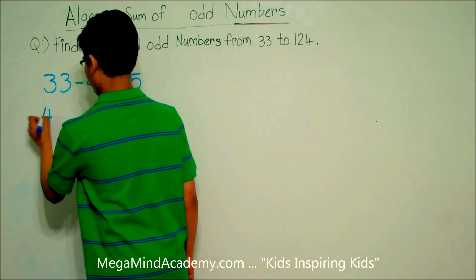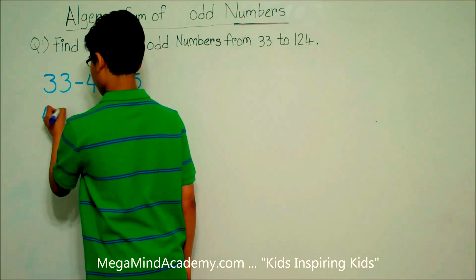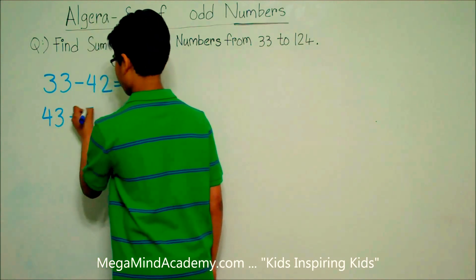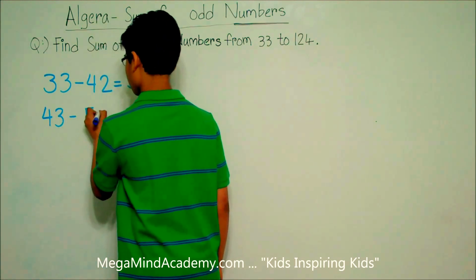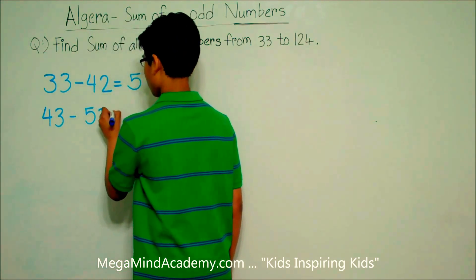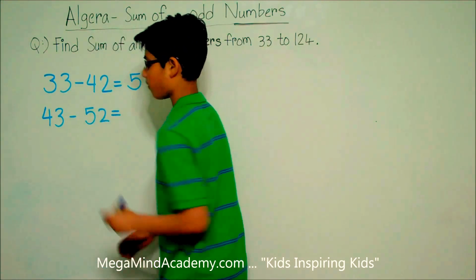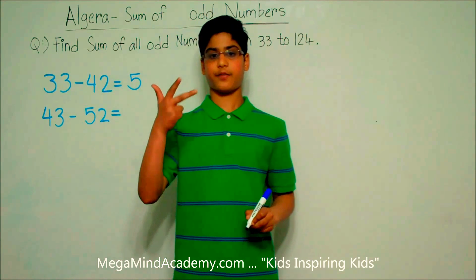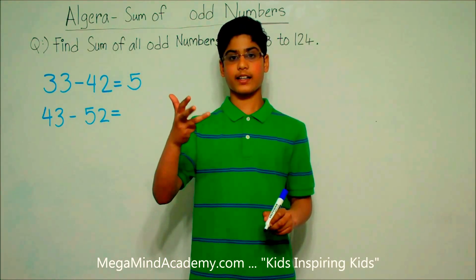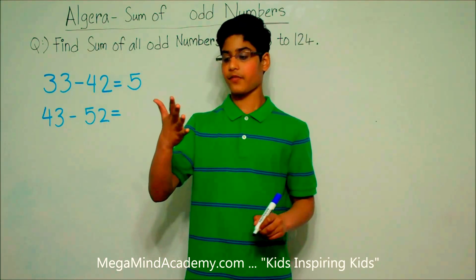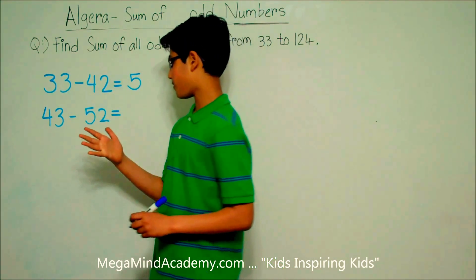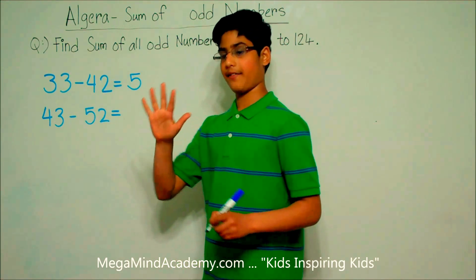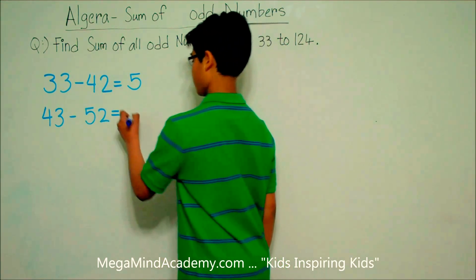From 43 to 52, there are 43, 45, 47, 49, and 51. So, there are 5 odd numbers.